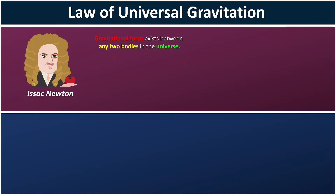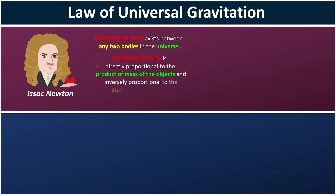And this gravitational force will be affected by two factors. The first one is the mass of the objects, and the second one is the distance between the two objects.